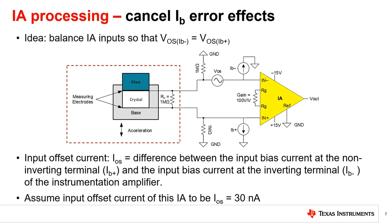You might be asking yourself: what if I balance the input of the IA by adding a 1 megaohm resistor from each input to ground, in hopes of canceling these input bias current effects? Now the offset due to IB seen on the inverting input would equal the offset on the non-inverting input, and by the idealized model of an IA, the IA should amplify the differential voltage and reject the common mode voltage caused by the output impedance and IB effects — right? Not quite.